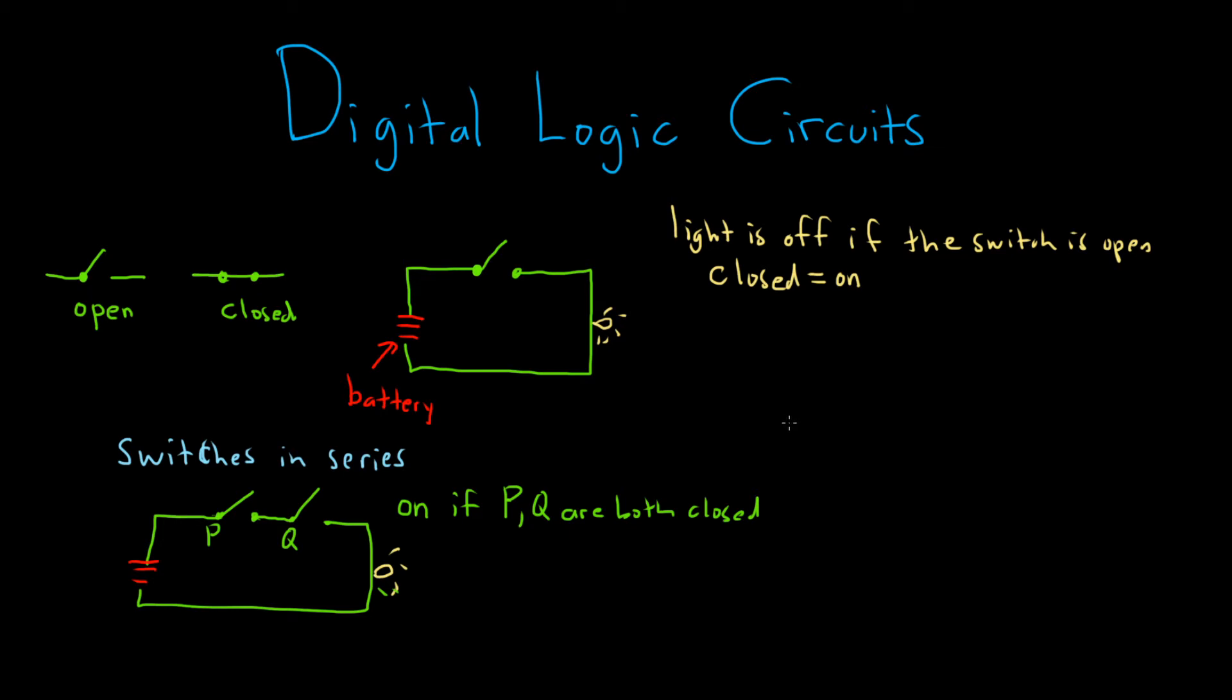If we look at what's called switches in parallel, switches in parallel would look something like this. Okay, and we have an open switch here and an open switch here. Let's go ahead and name things. This will be Q, this will be P. And they're both in the open position. So the light in this case will be off. I'll go ahead and draw the light here. There's our light.